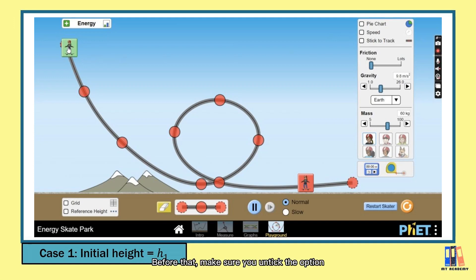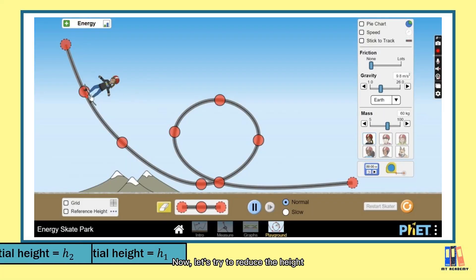Before that, make sure you untick the object stick to path on the right if you are performing the simulation. First simulation is about the girl is released from the tallest height. We can see that the girl has successfully made a vertical loop.